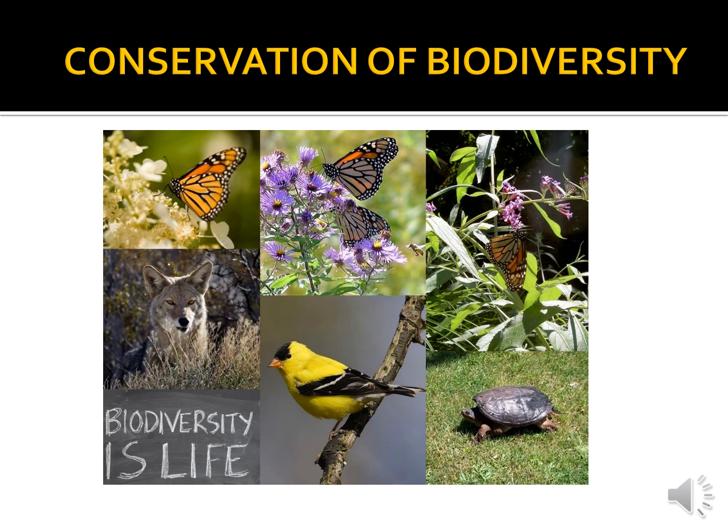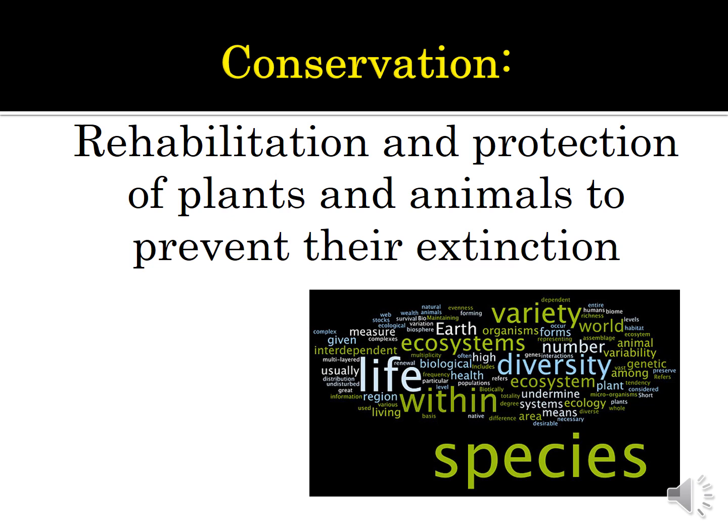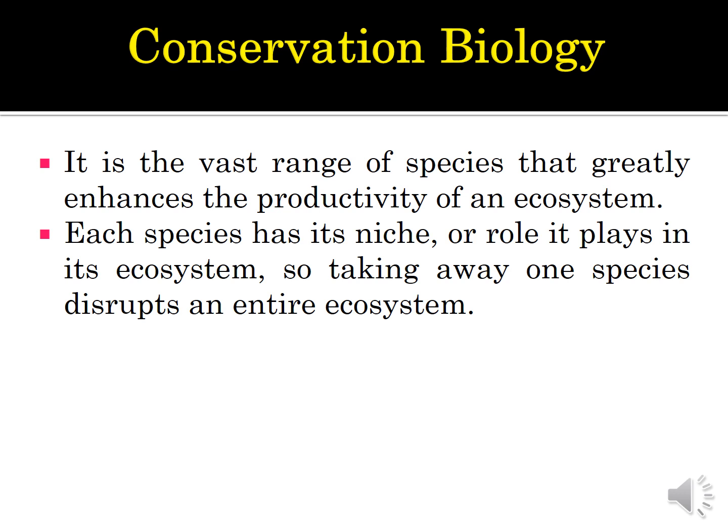Hello, hi, welcome again. This is the second part of my lecture on threat and conservation of biodiversity. For this part, we are only concerned about the conservation of biodiversity. In conservation, there are actually two kinds of action that need to be taken into account, which are rehabilitation and protection, with an aim to prevent plants and animals from extinction. All of this conservation falls under a field in biology called conservation biology.